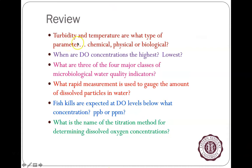Review: When we measure turbidity and temperature, those are physical — not chemical or biological — measures. Dissolved oxygen concentrations are highest at dawn, after photosynthesis has been occurring through the day prior, and lowest at dusk after nighttime respiration has drawn them down.